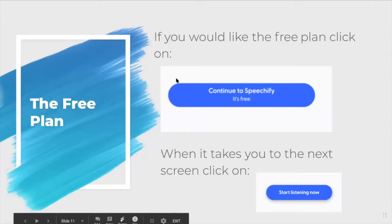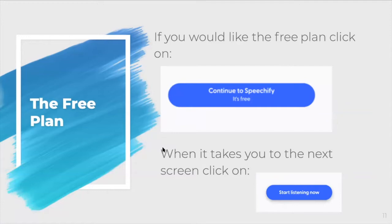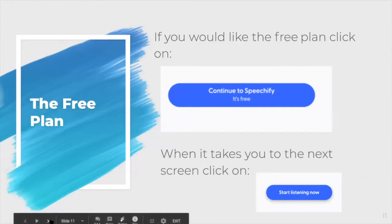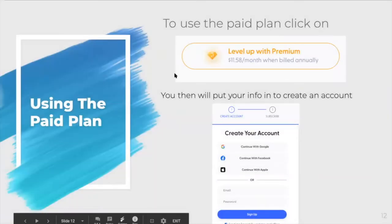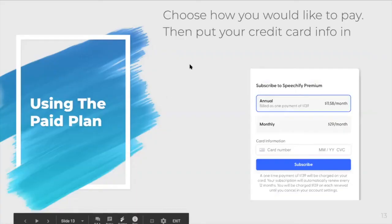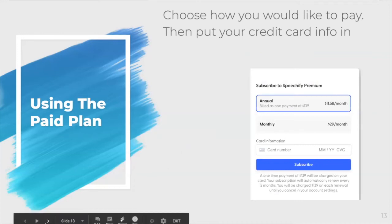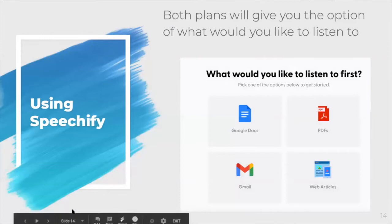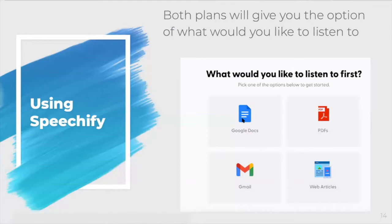If you prefer the free plan, click on 'Continue to Speechify — it's free.' When it takes you to the next screen, click on 'Start listening now.' If you want the paid plan, click on 'Level up with premium,' put in your information to create an account, pick whether you'd like to pay annually or monthly, then enter your credit card information and click subscribe. Both plans will give you the next screen where you can choose how you want to use it — Google Docs, PDFs, Gmail, or web articles.